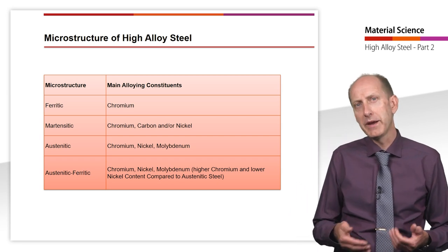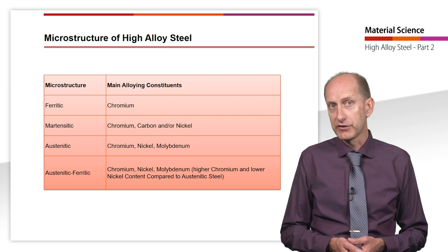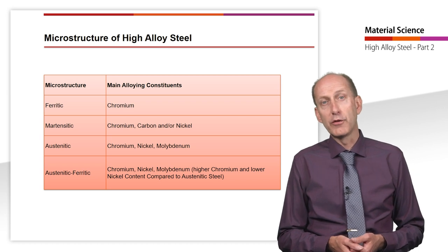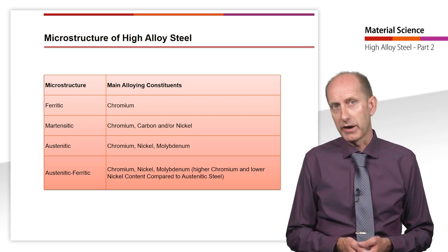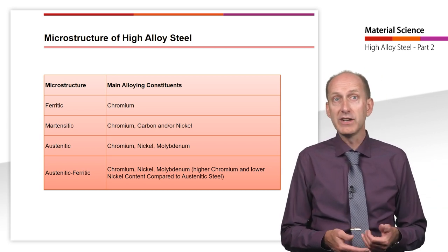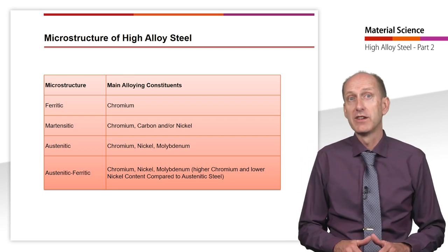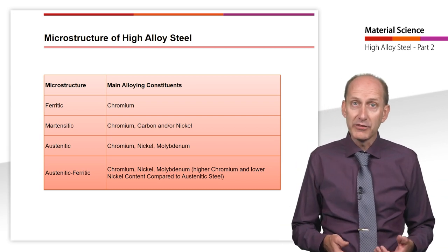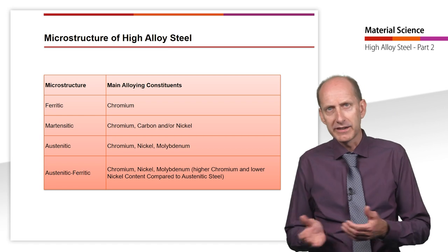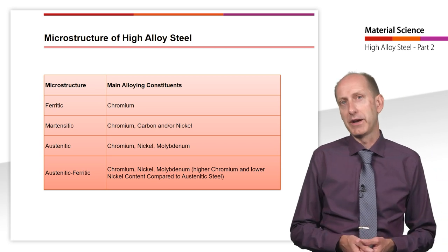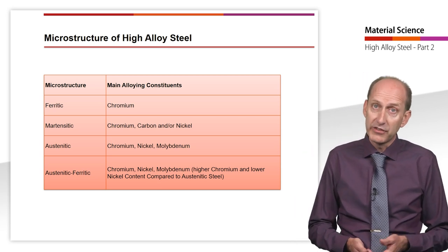If chromium is the only main alloying element, a ferritic microstructure will result. For martensitic hardening, sufficient amounts of carbon or nickel are also required. If nickel is added to chromium in sufficient quantities, the austenite is stable even at low temperatures and we obtain austenitic stainless steel. Sometimes a combination of properties between ferritic and austenitic microstructure is desired, in which case an austenitic-ferritic microstructure can also be obtained with higher chromium and lower nickel contents.